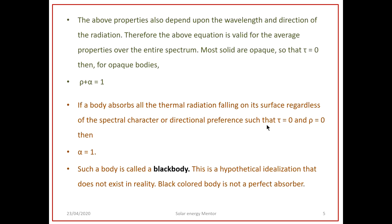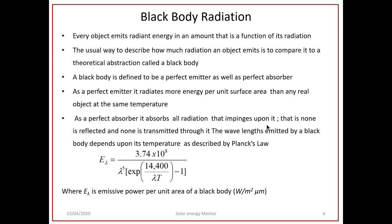The black body is a hypothetical idealization — there exists no black body in the real world. A black colored body is not a black body; it is not a perfect absorber. Every object emits radiant energy as a function of its temperature. The usual way to describe how much radiation an object emits is to compare it to a black body, which serves as a benchmark of radiation.